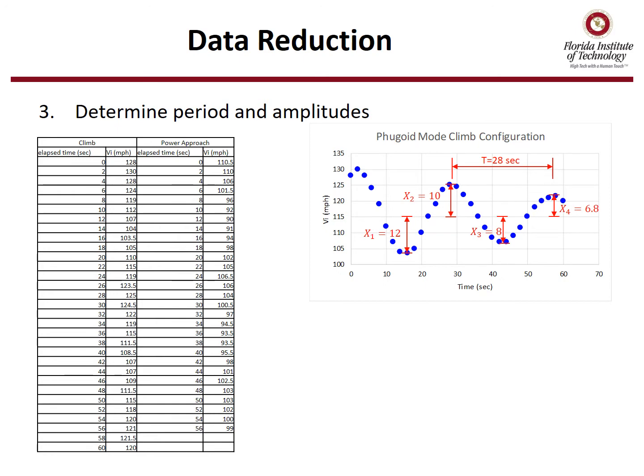Step three is to determine the period, the time from peak to peak, and then the various amplitudes. As you can see for this data, the period is about 28 seconds, and then the sine wave seems to center about 115 on the indicated airspeed. So we've done the amplitudes x1, x2, x3, and x4.